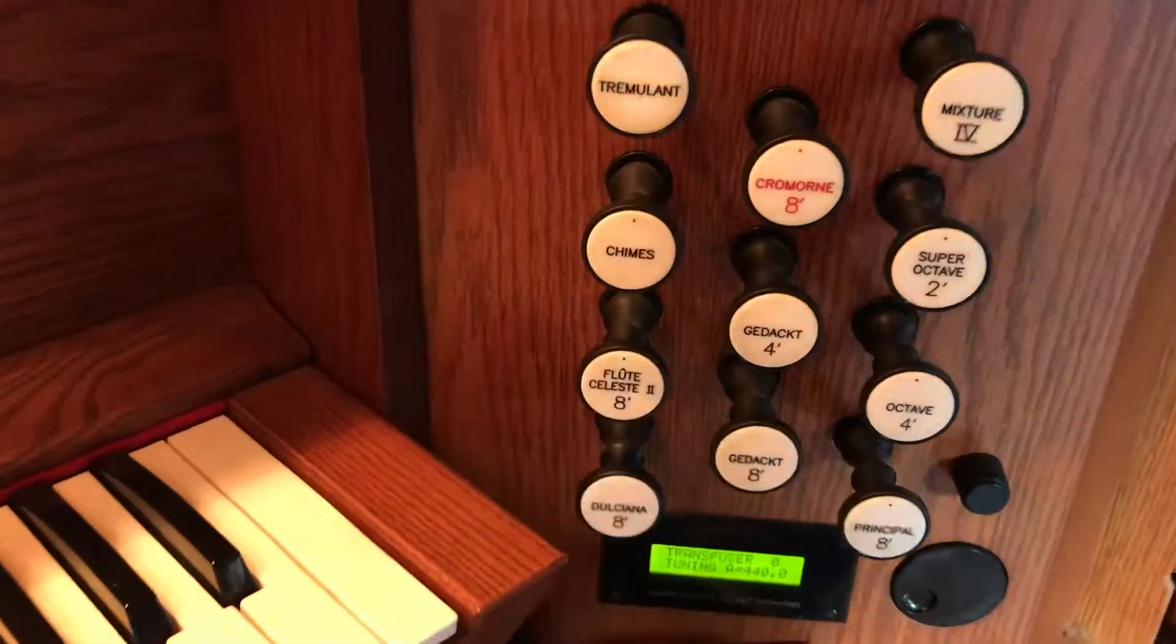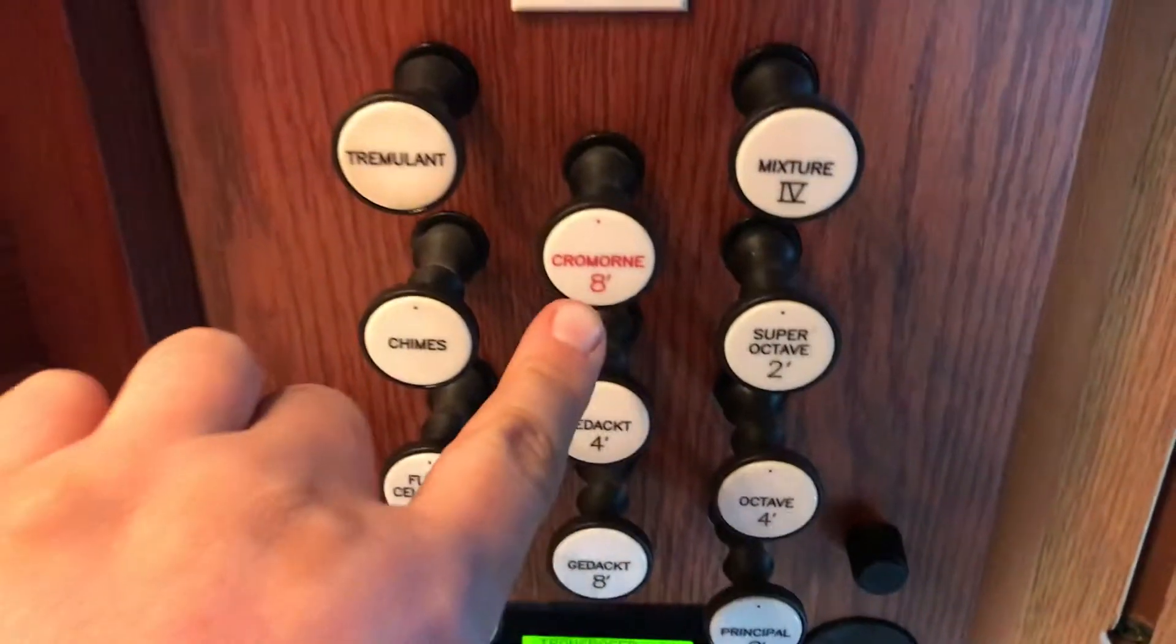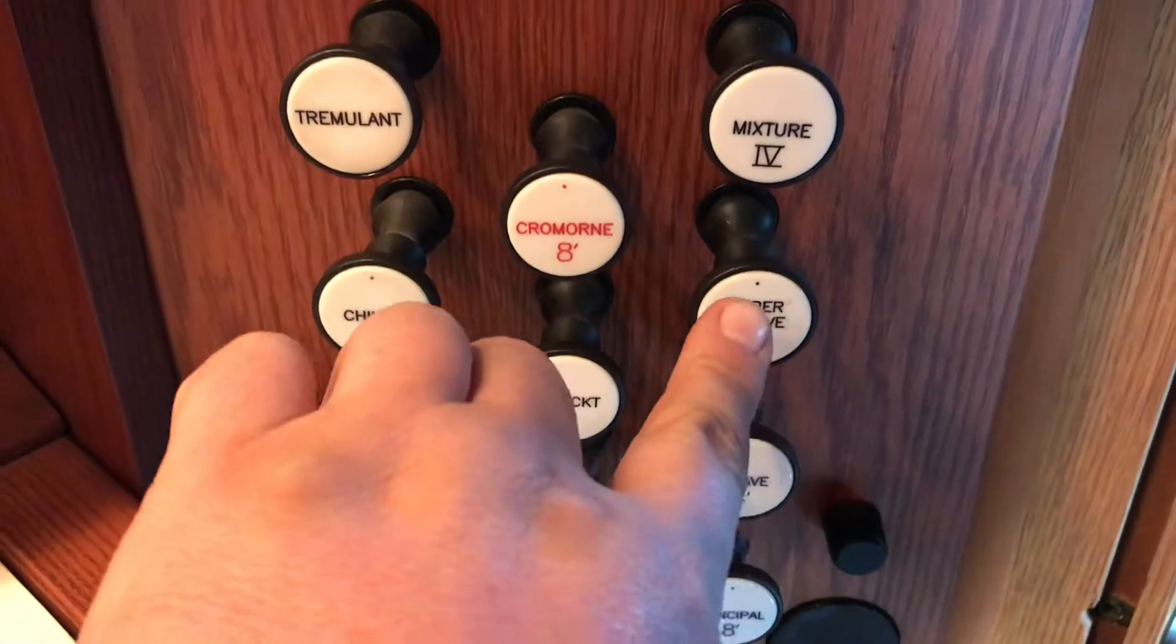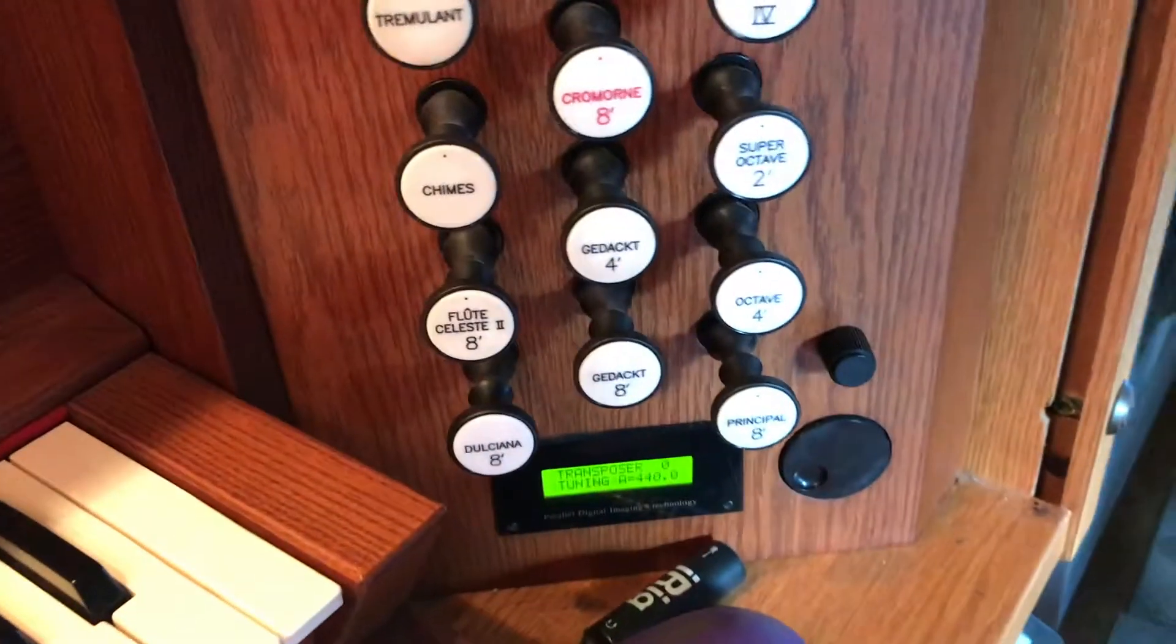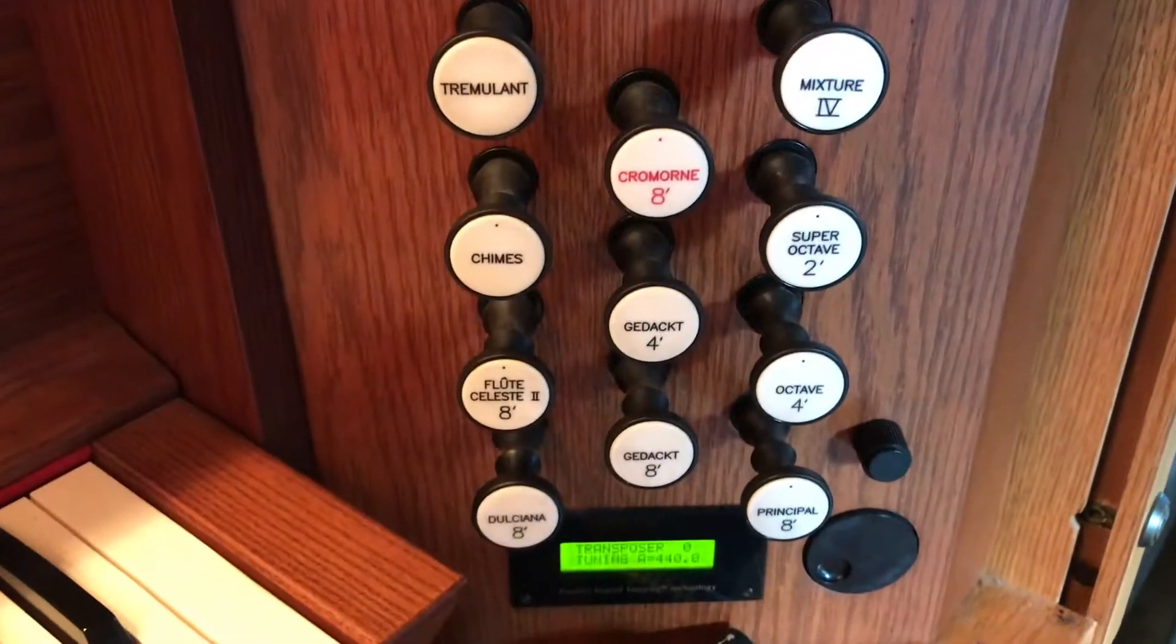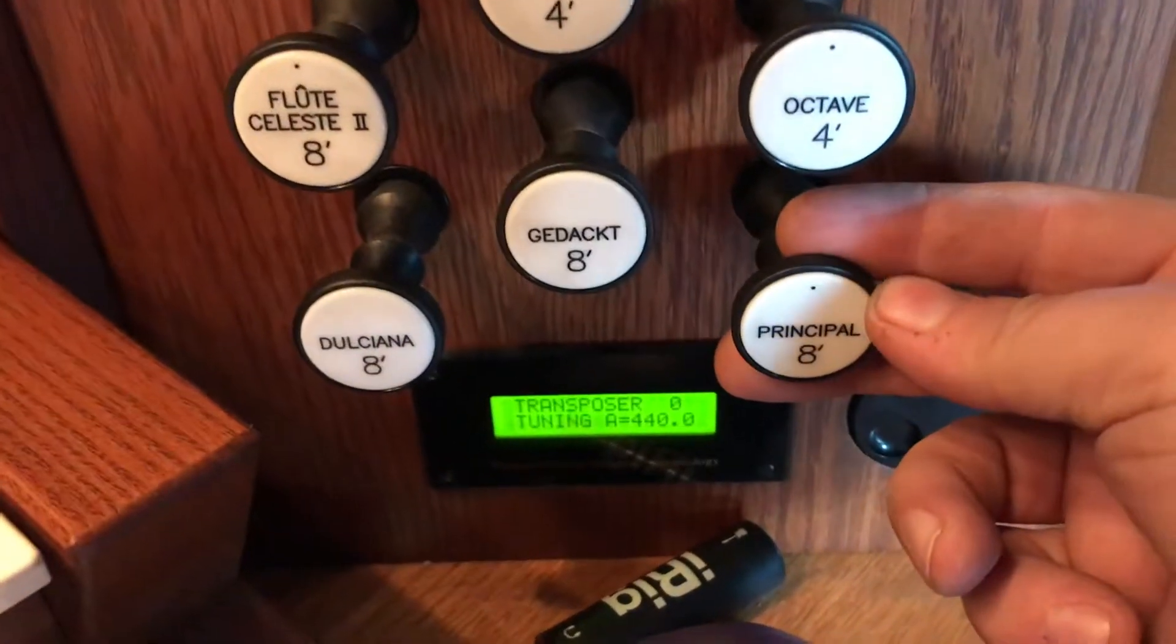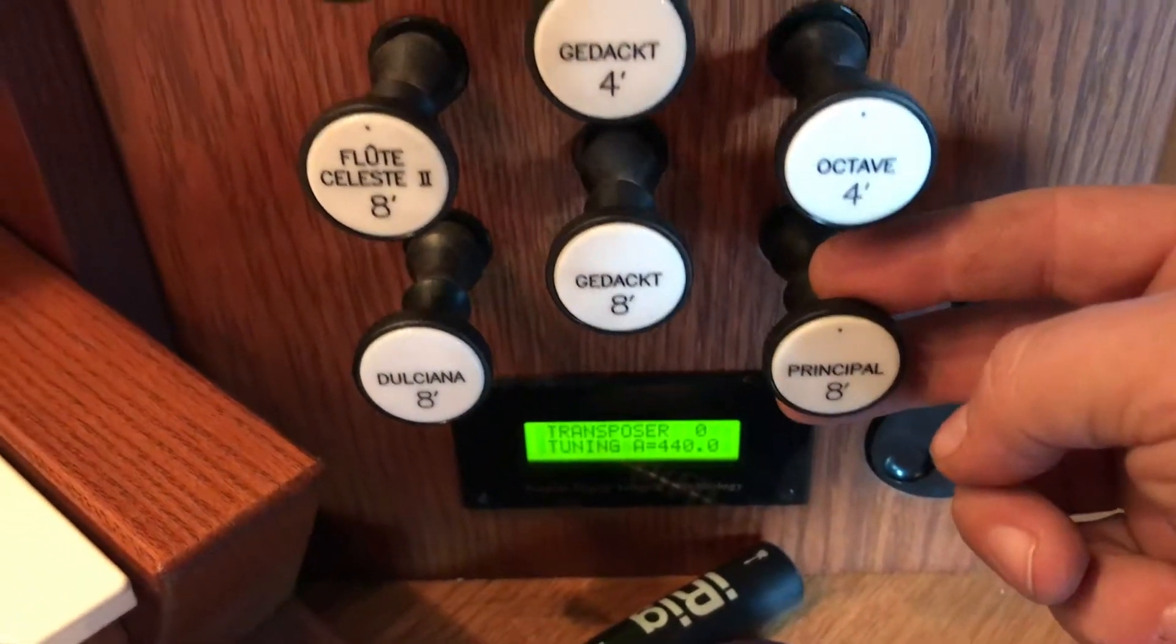But each one of these has little numbers underneath, like this one says 8 foot, this one says 4 foot, 8 foot, 2 foot. Those are literally feet. So that means, like if we pull the principal, 8 foot, spelled just like your principal at school. Okay, if we pull that,